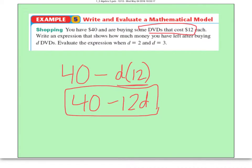Then they just want to evaluate it once when D is 2. Okay, we can do that. 40 minus 12 times 2. Order of operations would say do 12 times 2 first. So 40 minus 24. We therefore would have, left in our pocket, $16.